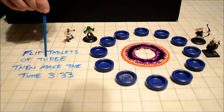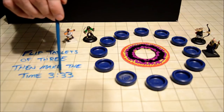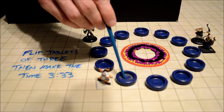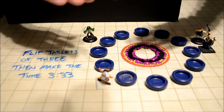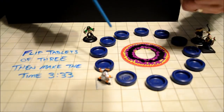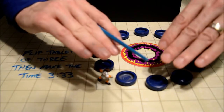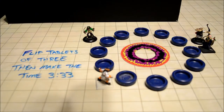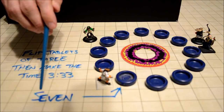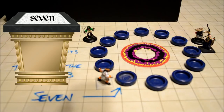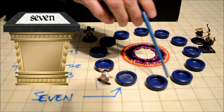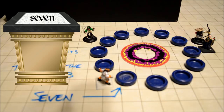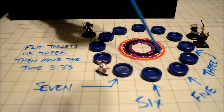The message reads: flip tablets of three, then make the time three three three. If a character investigates the pedestals, each one has a stone tablet that can be flipped over. For example, if a character flips one over onto the pedestal, it will show the number seven — not the numeral 7, but seven spelled out: S-E-V-E-N. Characters can go through and flip every tablet over, and each one is in this same format.